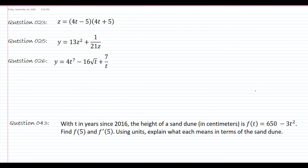This first one I see I have 4t minus 5 times 4t plus 5. I could just go ahead and multiply, FOIL that out, and it's actually the difference of two squares and get 16t squared minus 25, because that middle piece when you FOIL it cancels out.